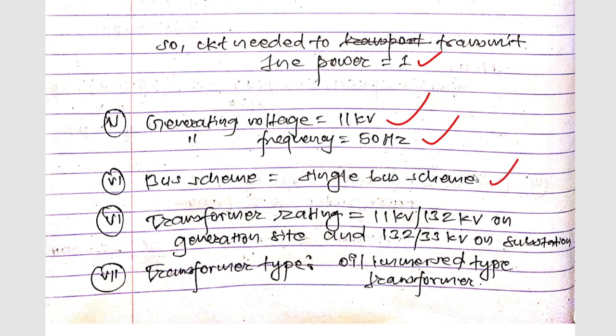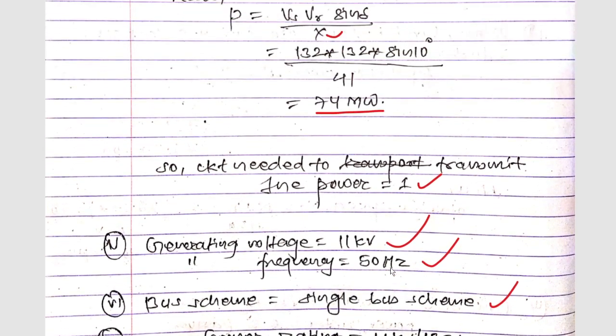Generating frequency will be 50 Hz. The bus scheme will use single bus scheme. Transformer rating will be 11 kV / 132 kV on the generation side, and at the substation 132/33 kV. The transformer type will be oil immersed type transformers. These were all for the design part.